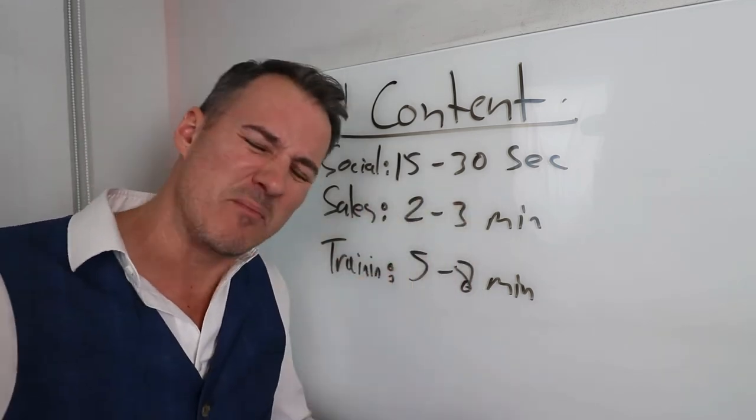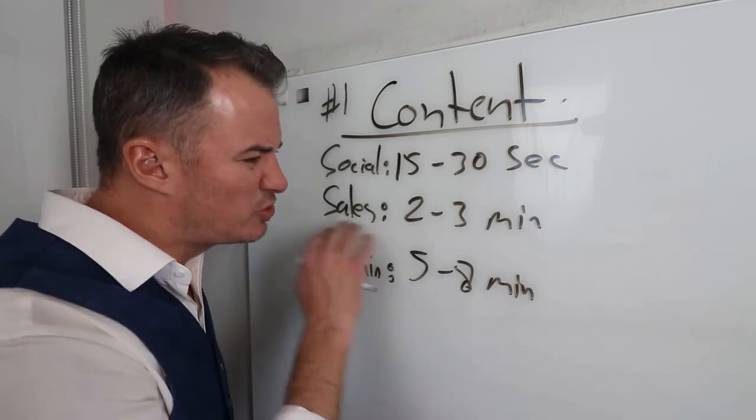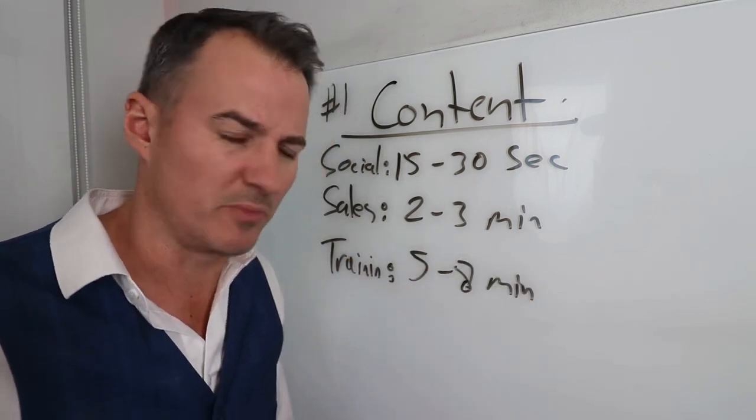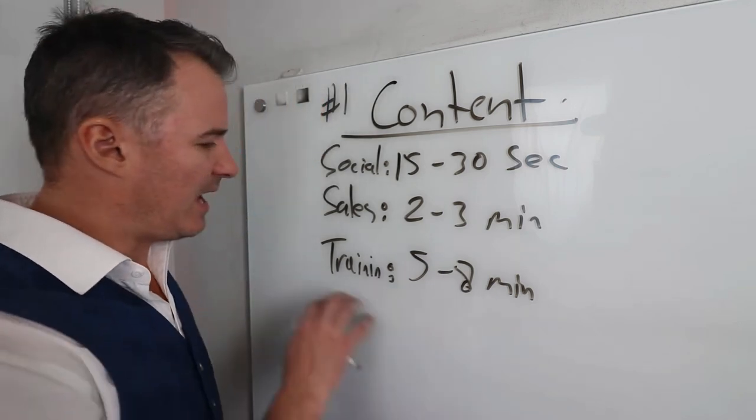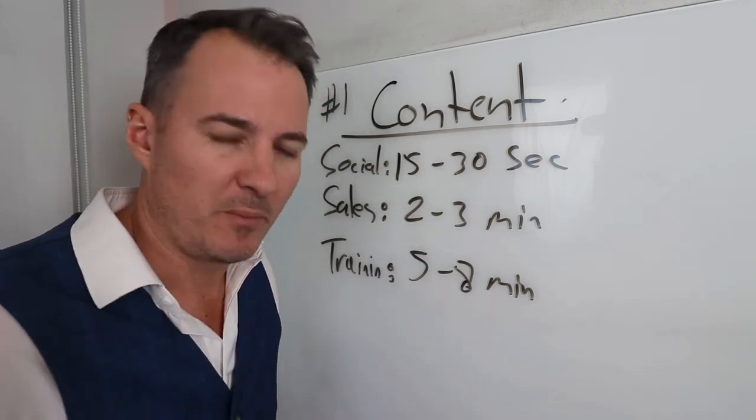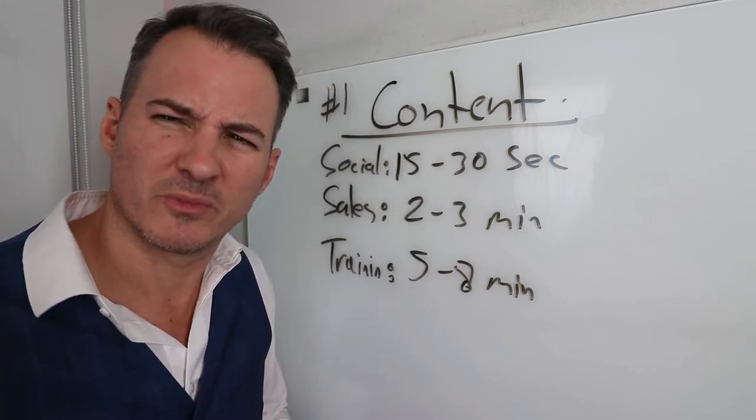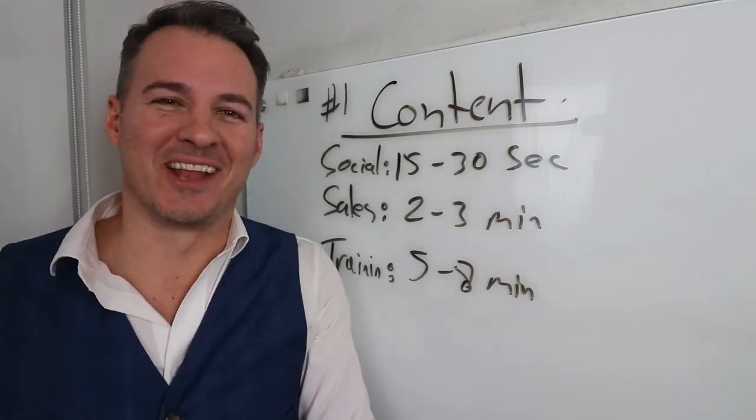But if you're looking for social snippets, they're usually around that 15 to 30 second mark. They look like mini little commercials. For the sales, the email stuff, this is the majority of what people do in any business. You should be focused on around that two to three minute mark. And if it's training content, it's five to eight minute piece of segments. All right, let's get to the next one.